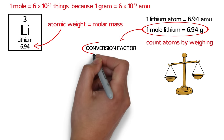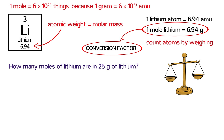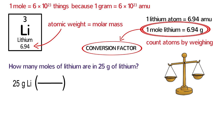Let's try a problem: how many moles of lithium are in 25 grams of lithium? This is a one-step unit conversion problem. Like any unit conversion problem, the first thing you should do is write down the quantity that you know — in this case, 25 grams of lithium. Next, multiply this by a conversion factor fraction. Remember that for mole conversions, the molar mass is always our conversion factor. One mole of lithium equals 6.94 grams. Because we started with grams, we put 6.94 grams on the bottom of the fraction.